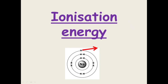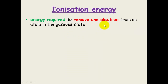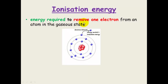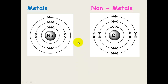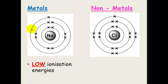Ionization energy is the energy required to move one electron from an atom — this is in the gaseous state. It's basically a measure of how tightly the outer shell electrons are held to an atom. Every atom wants a full outer shell: metals achieve this by losing their outer shell electron, while non-metals like chlorine, which has seven outer electrons, want to gain an electron. So ionization energy is the energy required to lose an electron.